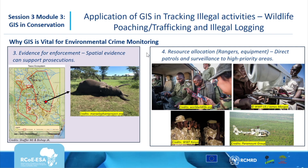Regarding crime monitoring, GIS can be a very important tool in supporting evidence enforcement. Poaching and illegal logging activities happen on the ground, and there is always a need to capture ground information or evidence. Within GIS we can map the specific locations where poaching or logging has happened, link this with photos of the situation as found, and present this as evidence towards supporting prosecutions of perpetrators of environmental crime.